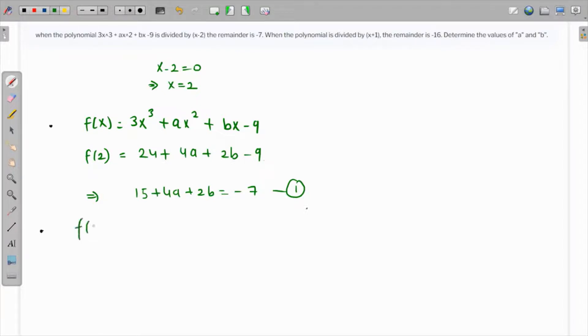f(-1) = -3 + a - b - 9. This value is -3 and -9, which is -12. So -12 + a - b = -16. This is equation 2.